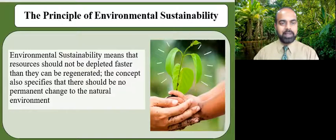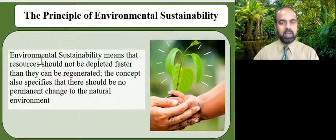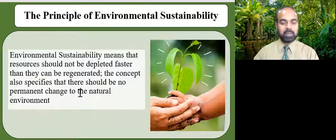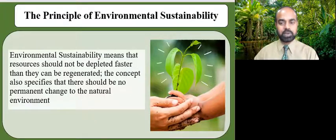The third guiding principle of environmental policy-making is the principle of environmental sustainability. Environmental sustainability means that resources should not be depleted faster than they can be regenerated. The concept also specifies that there should be no permanent change to the natural environment. An environmentally sustainable lifestyle is the adoption of a lifestyle that minimizes demands upon the environment — for example, lowering one's carbon footprint through energy conservation measures.